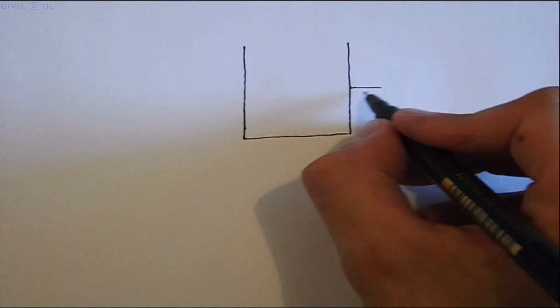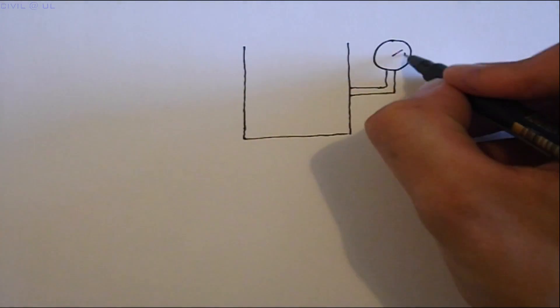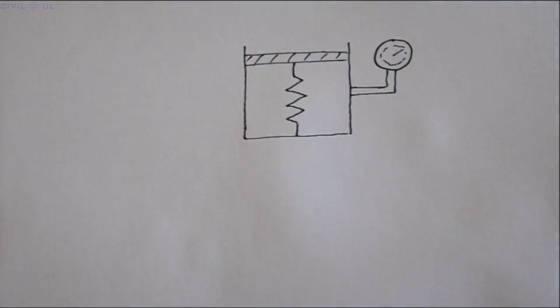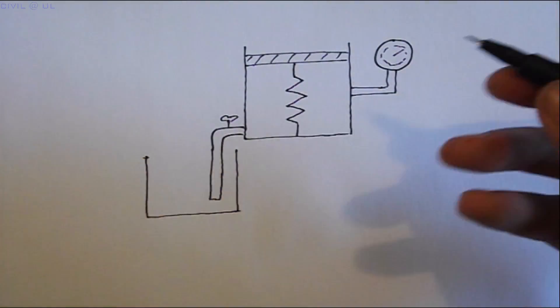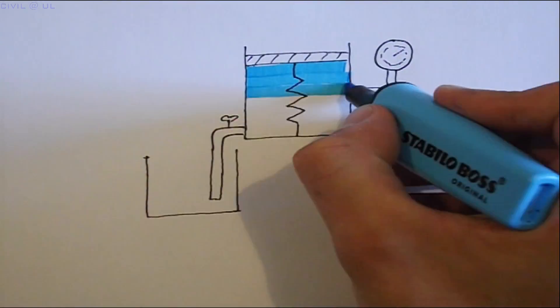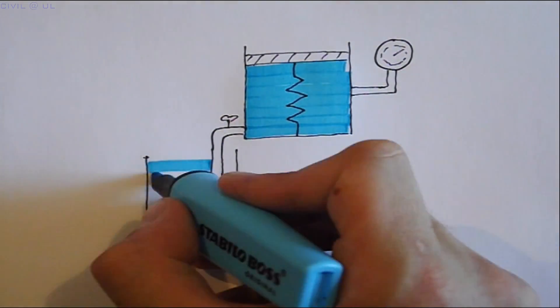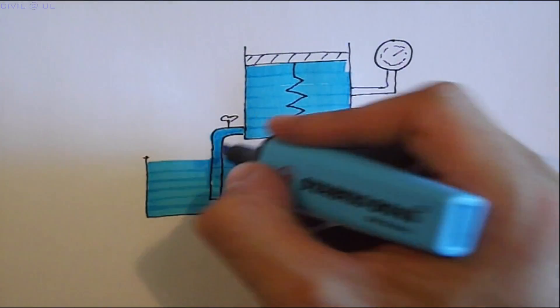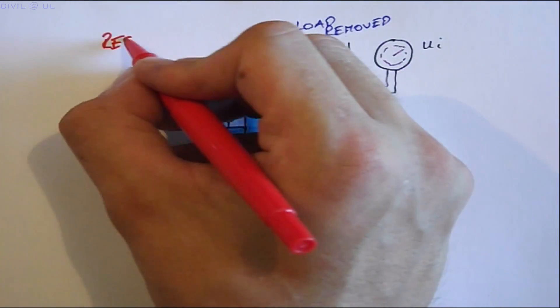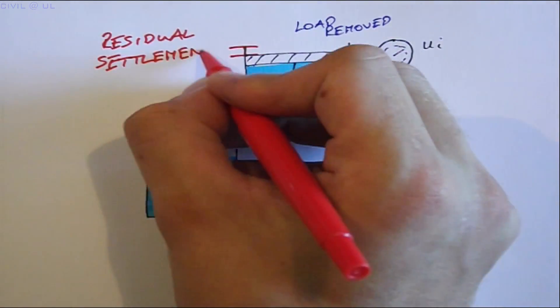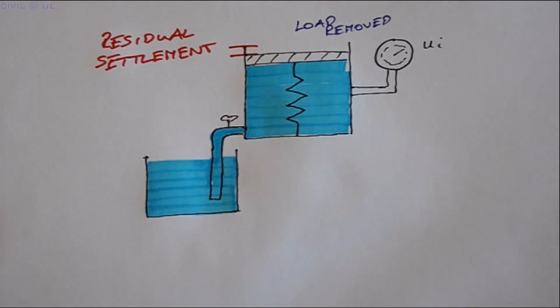Incidentally, consolidation works in reverse. So if the drain was connected to a reservoir and the load on the piston removed, the soil would swell back but not to its original position, as the soil would have undergone some irregular irreversible movement as the grains were reconfigured into a denser configuration upon loading.